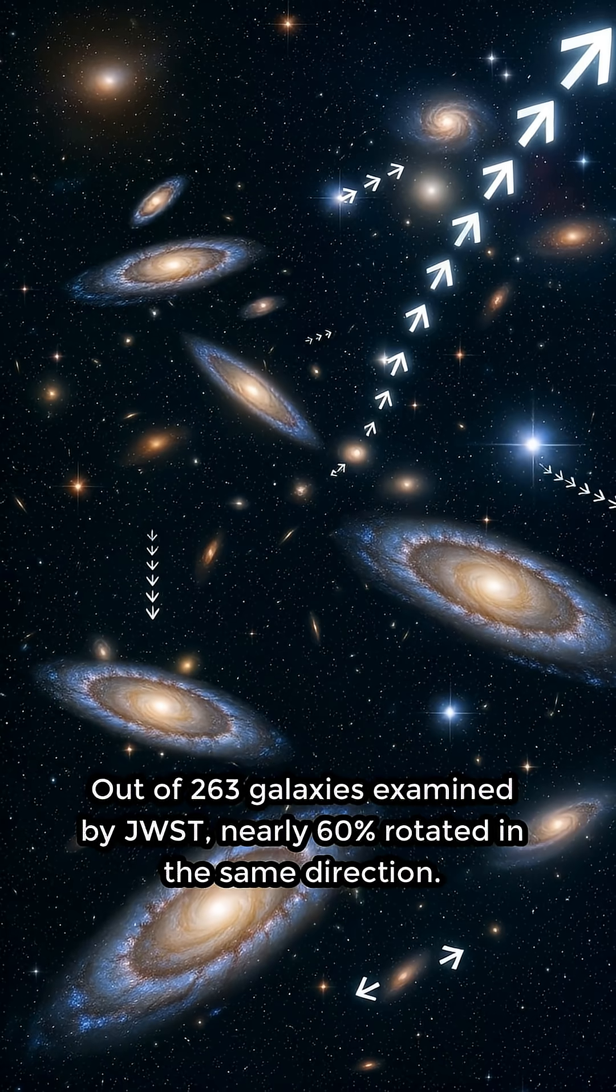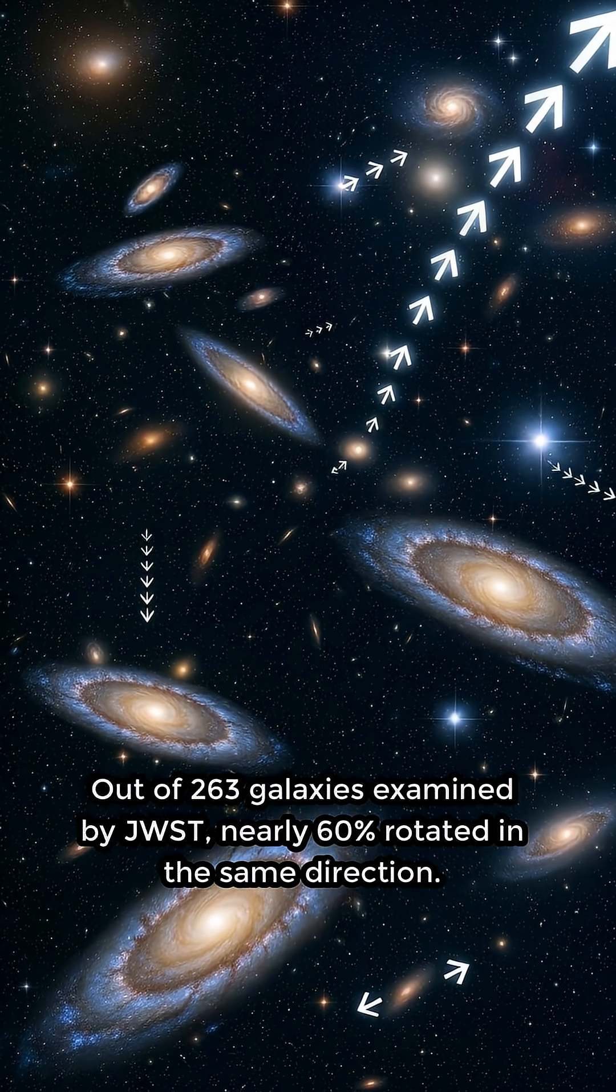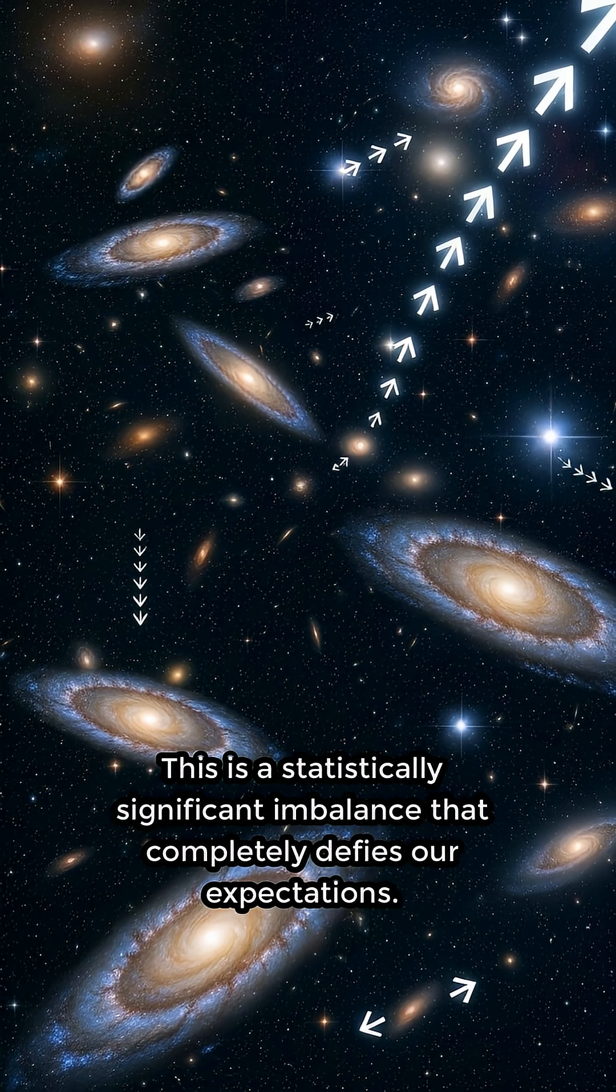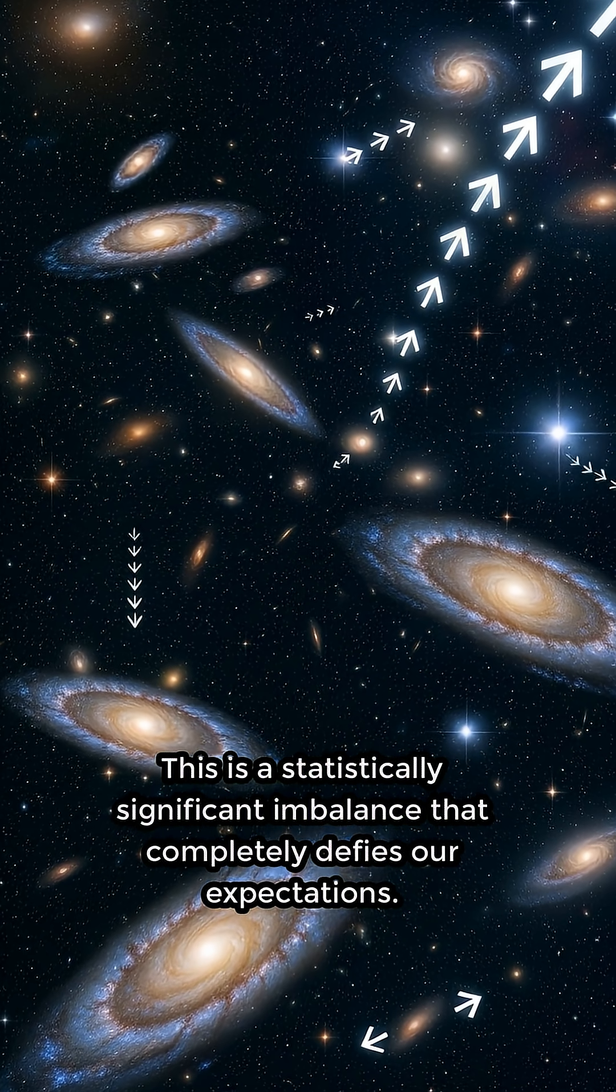Out of 263 galaxies examined by JWST, nearly 60% rotated in the same direction. This is a statistically significant imbalance that completely defies our expectations.